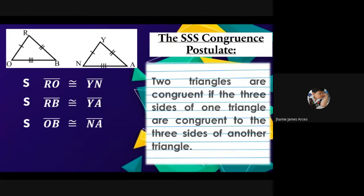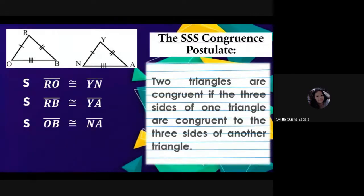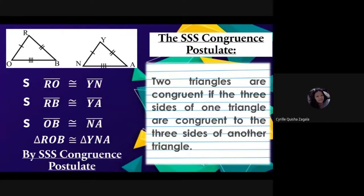What will be the last statement? Sagala answers: triangle ROB is congruent to triangle YNA by SSS congruence postulate. Triangle ROB is congruent to triangle YNA — they are congruent by SSS congruence postulate.